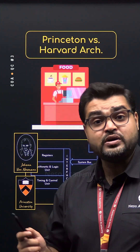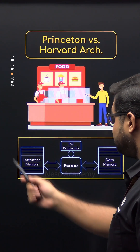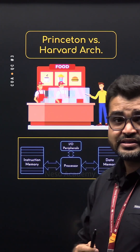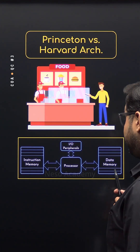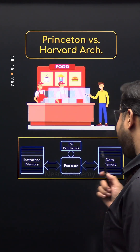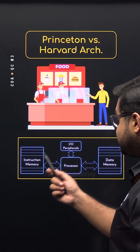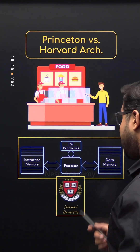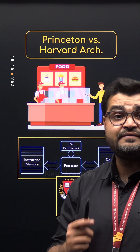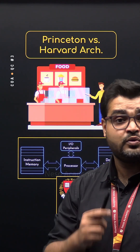Now imagine two counters instead of one — one for placing your orders and another for picking up food. Harvard architecture follows a similar concept. As you can notice, it uses separate memories and buses for handling instructions and data, allowing things to move faster because both can be accessed simultaneously. It is called Harvard architecture because it was developed by researchers working on the Harvard Mark 1 computer during World War II.